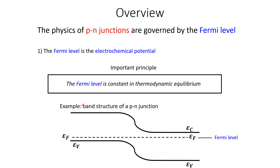This principle is very important to understand the physics of PN junctions. We're going to see later that the band structure of a PN junction — which is a drawing of the energy levels — is bent in the middle. The reason why it is bent and why it looks like that all depends on the fact that the Fermi level is constant across the junction when it is in equilibrium. The reason why it is constant is intimately connected to the notion of the Fermi level as the electrochemical potential.